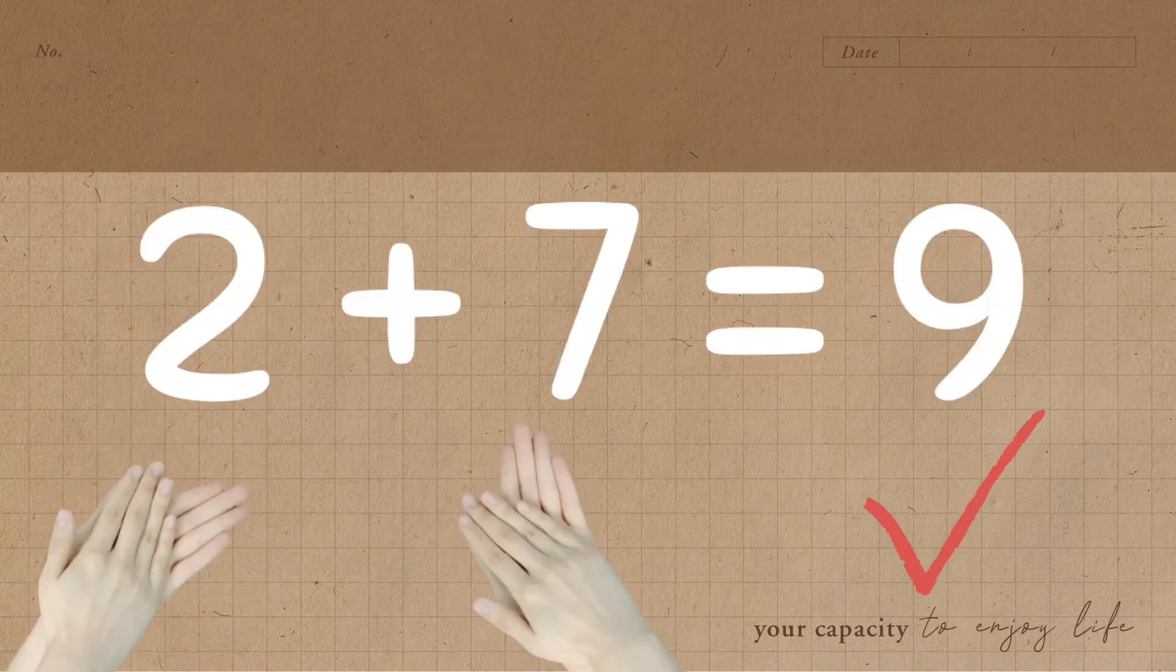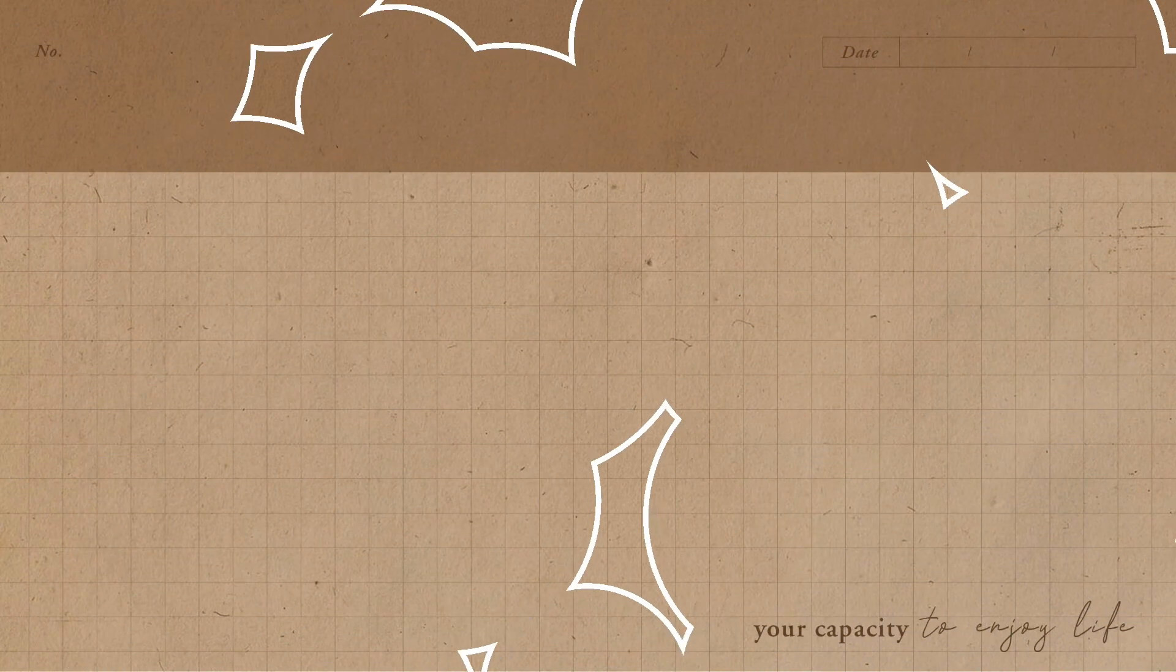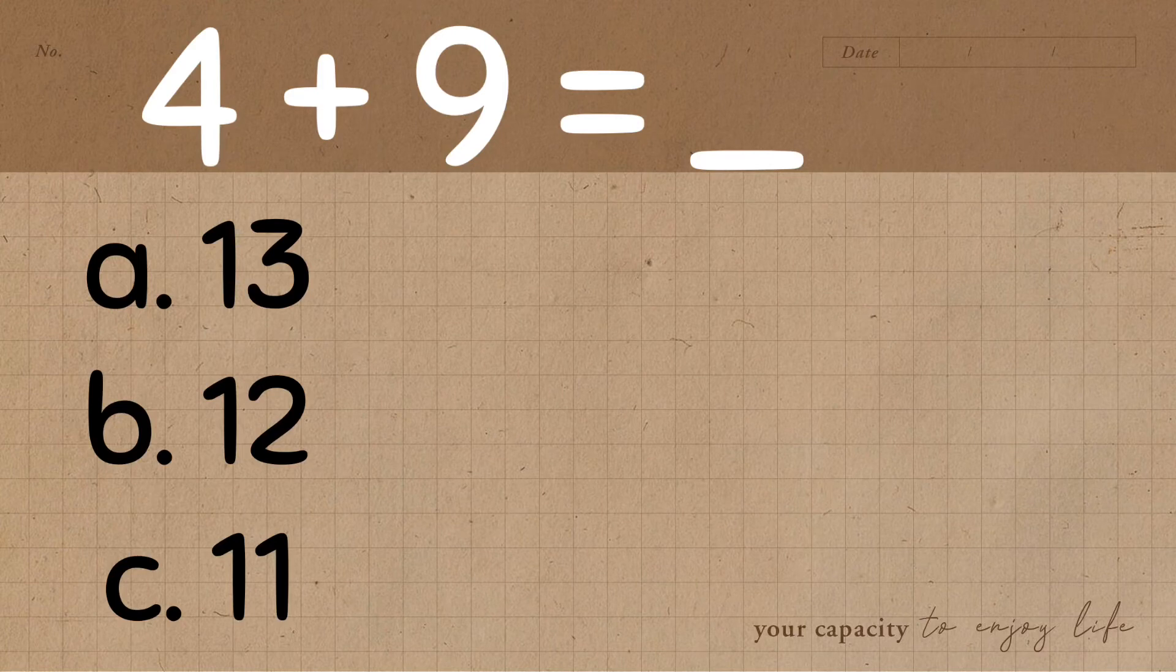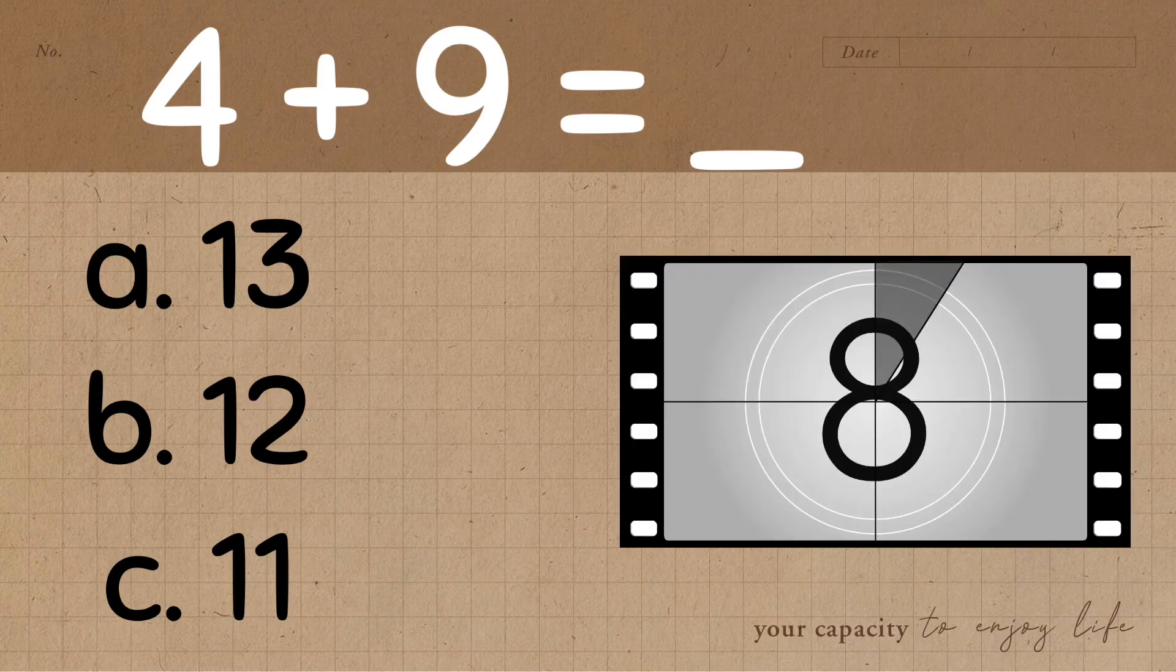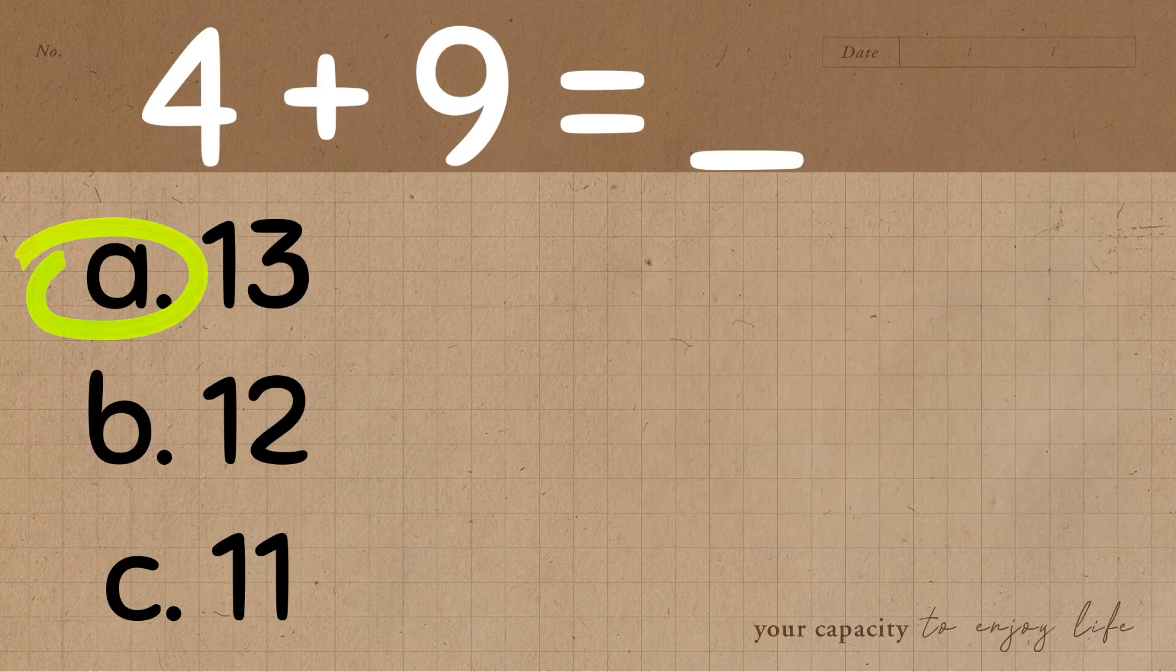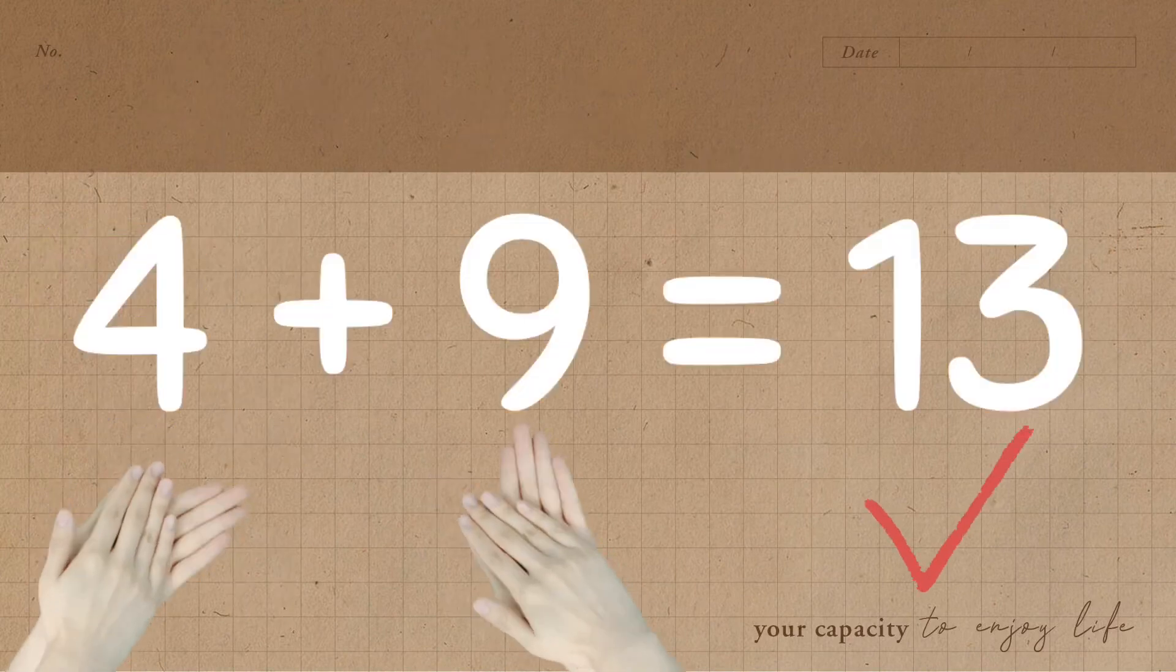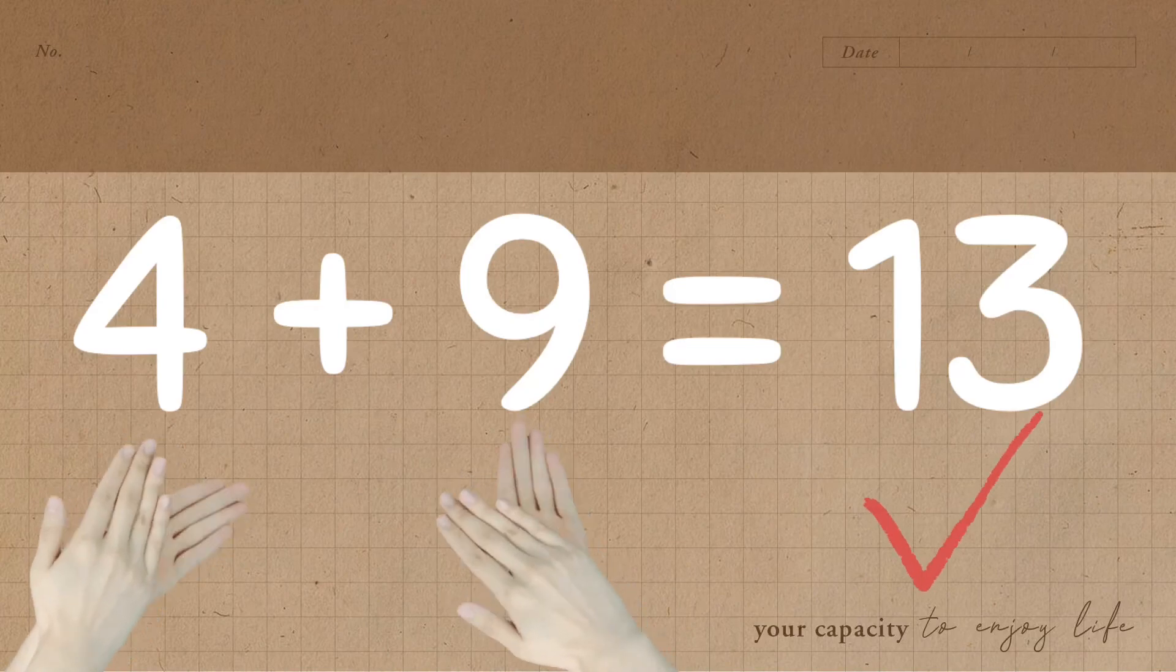2 plus 7 is equal to 9. 4 plus 9 is equal to blank. Is it A, 13, B, 12, or C, 11? The correct answer is A. 4 plus 9 is equal to 13.